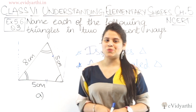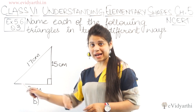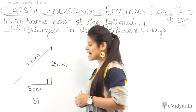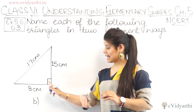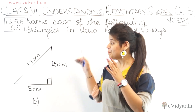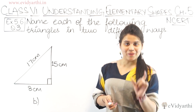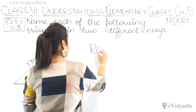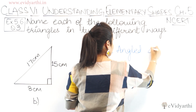Let's come to the second part. In the second part, we have this triangle. First, let's judge by the angle. Looking at the angle, it is very clear that a right angle is given — this angle is 90 degrees. So this means one angle is a right angle, and therefore this will be a right angle triangle.